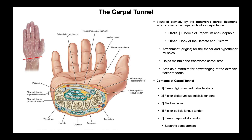Over here on the ulnar side, closer to the pinky, is the ulnar half of the transverse carpal ligament. Here's the pisiform — it's in the proximal row — and you can see that the transverse carpal ligament on this side has an attachment there as well. Down here is the hamate, which is in the distal row. Just because of where we're taking the cross-section, we can't see it here, but the transverse carpal ligament also has an attachment on the hook of the hamate.